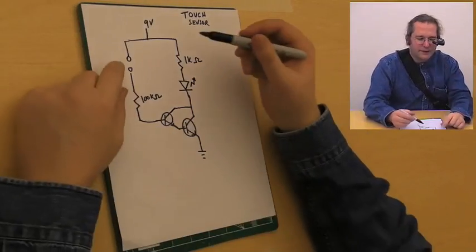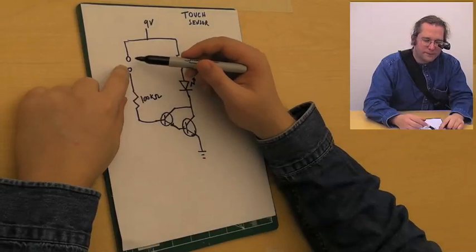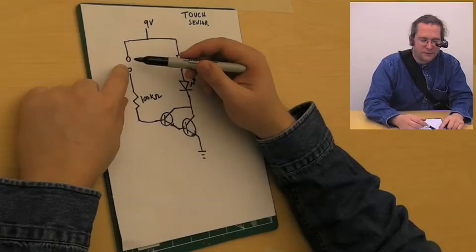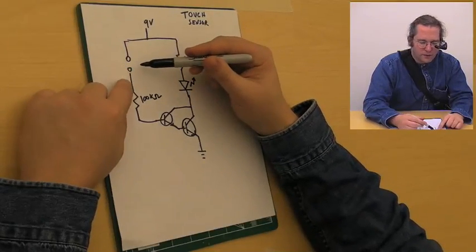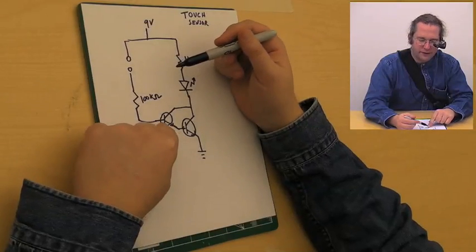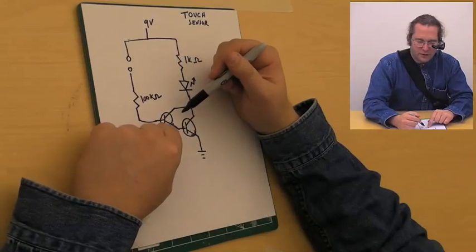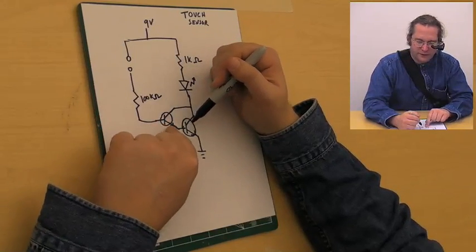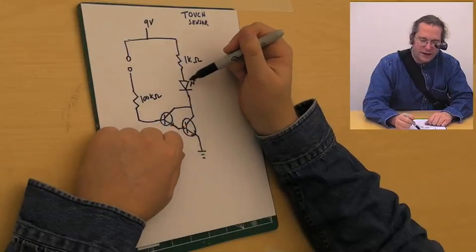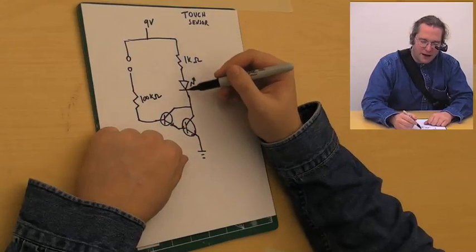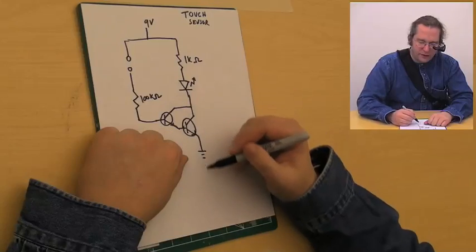So what happens is we have this normally open switch here. No current leaks down to the base of the first transistor, and so no current gets through the first transistor to the second transistor, and the LED does not light. In other words, there's no real path for electrons to flow through the LED to ground.